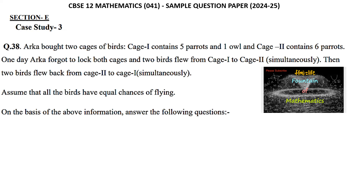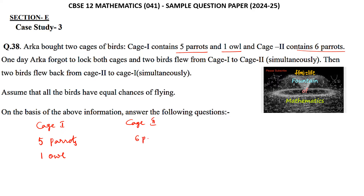Let's see case study 3. Arca brought 2 cages of birds. Cage 1 contains 5 parrots and 1 owl, and cage 2 contains 6 parrots. One day Arca forgot to lock both the cages and 2 birds flew from cage 1 to cage 2.